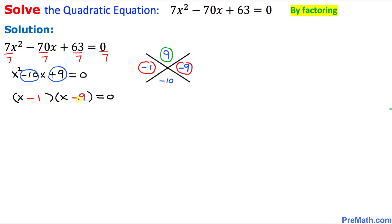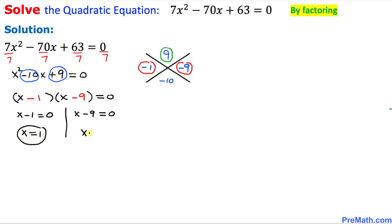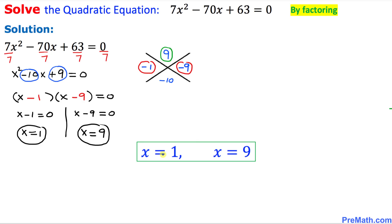So now these two factors equal to 0 — we can split them and separate them: x minus 1 equals 0 and x minus 9 equals 0. So x equals 1 is one solution and x equals 9 is our second solution. Thus our final answer is x equals 1 and x equals 9.